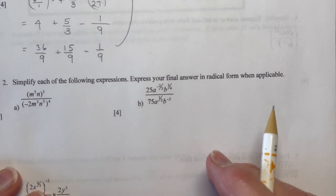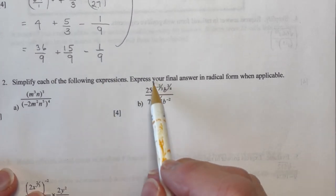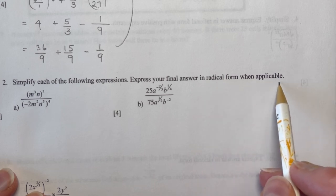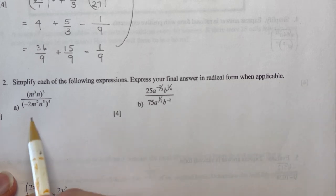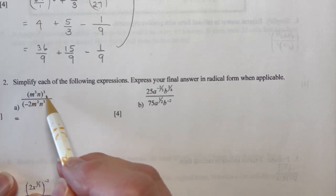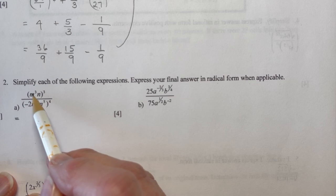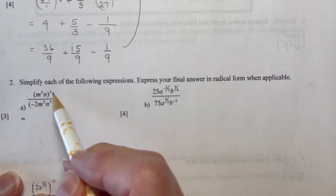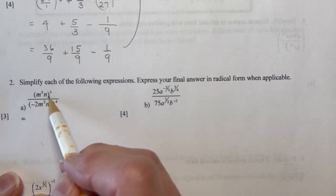Number 2. Simplify each of the following expressions. Express your final answer in radical form when applicable. Okay, well, we'll get to that when we get to it. So first things first here, this one here, 2a, we have m cubed and all in brackets cubed. So remember that you must apply this exponent to every term in the brackets.